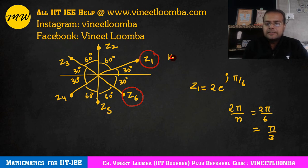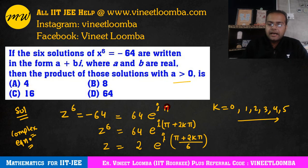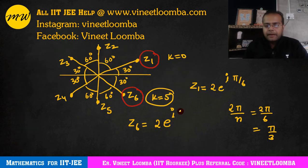So which values will these be? z1 is already written. When we put k value zero. And this will have come when we put k value 5 at the end. So what will be the value of z6? 2 e to the power i, here we put k value 5, so 5 times 2 is 10 plus 1, 11 pi by 6.